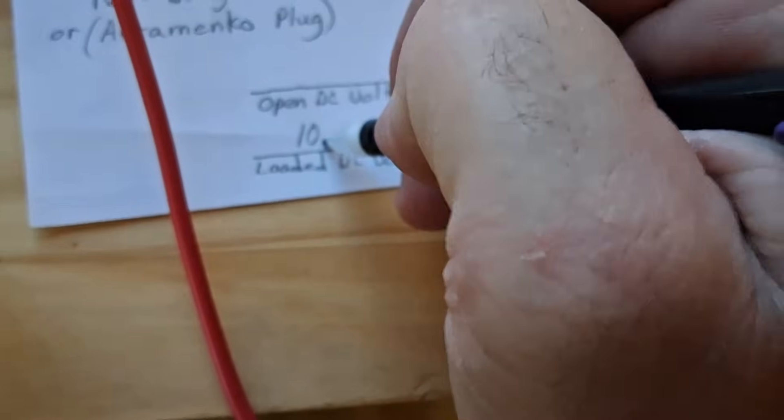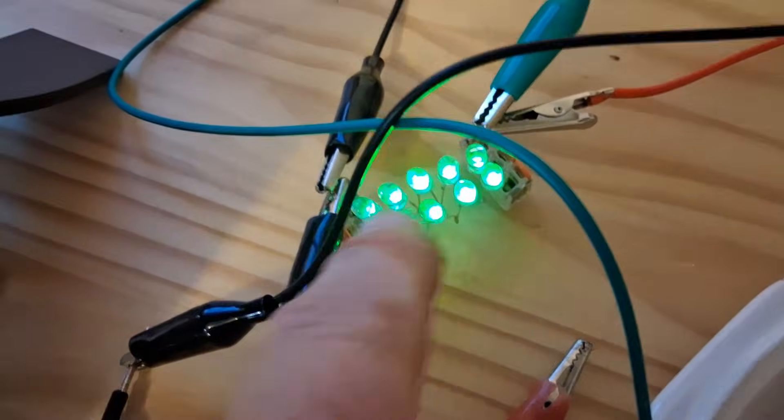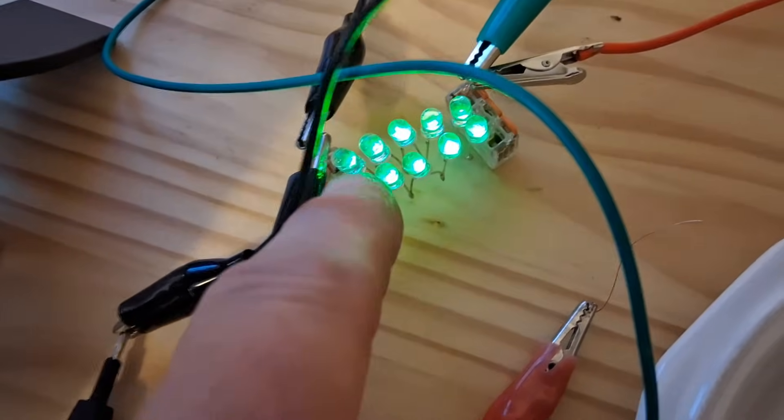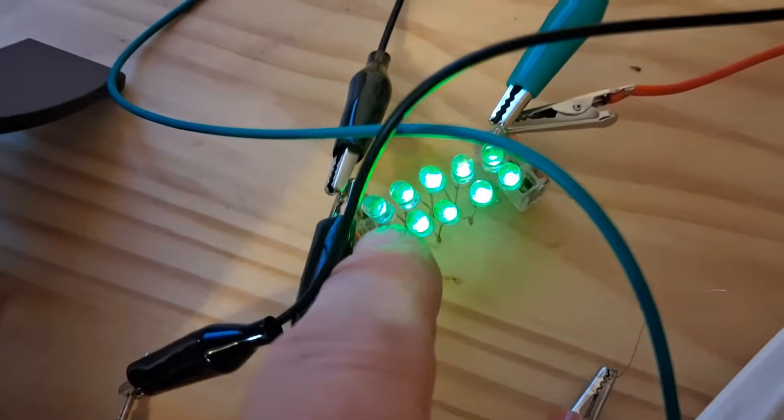But we are at 10.5 volts under load. I'll write that down. 10.5 volts. That's DC, DC current and DC voltage across these. There are two rows of five in series. These two rows are in parallel. Each string here is five in series.